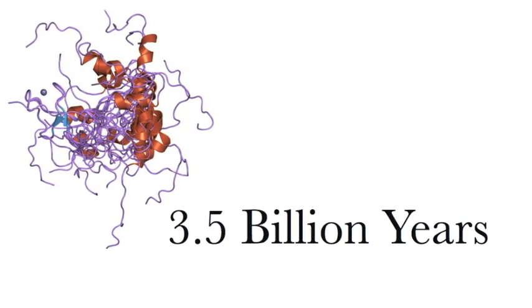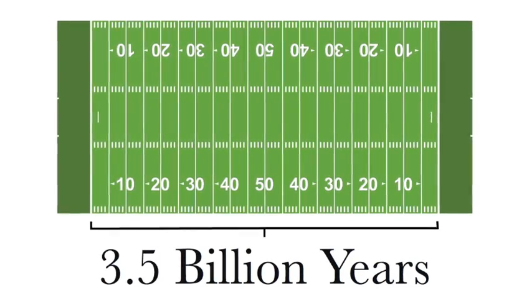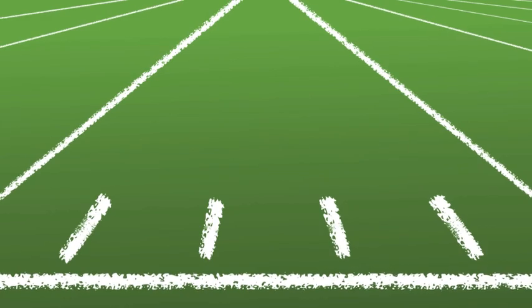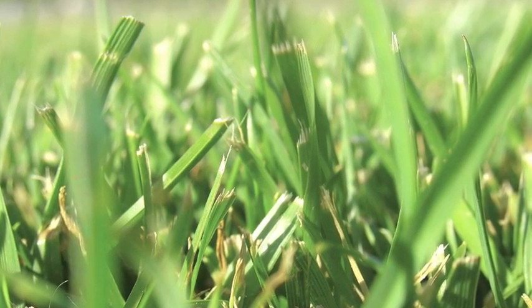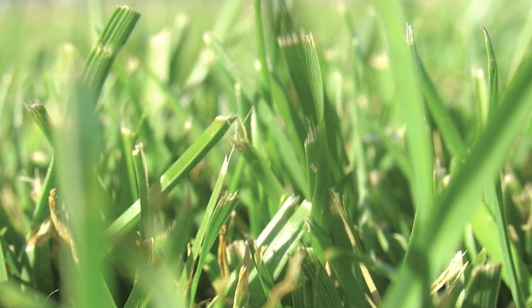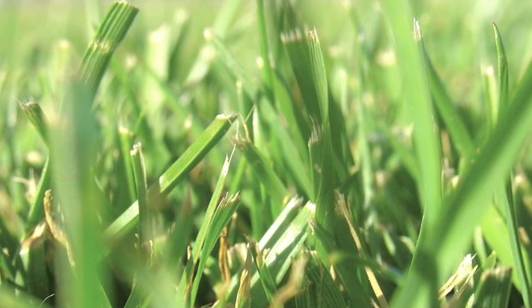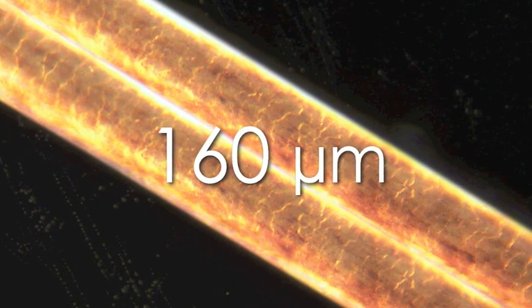Life on Earth originated 3.5 billion years ago. If 3.5 billion years was a football field, 6,000 years would not even be 5 yards. It would not even be a single yard. It would not even be the width of a blade of grass. If 3.5 billion years was a football field, 6,000 years would be the width of approximately 2 human hairs. Imagine what could happen with the whole football field.